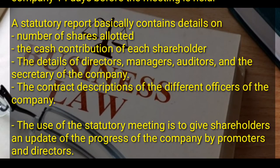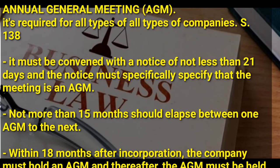The purpose of the statutory meeting is to give shareholders an update of the progress of the company by the promoters and the directors. The second meeting is the Annual General Meeting, which is known as the AGM.